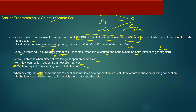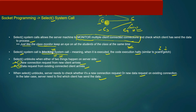When the select system call unblocks, the server needs to check whether it was triggered by a new connection request or a new data request on an existing connection. In the latter case, the server must identify which specific client sent the data — for example, whether it was C2 or C3 — and determine which client caused the unblock.